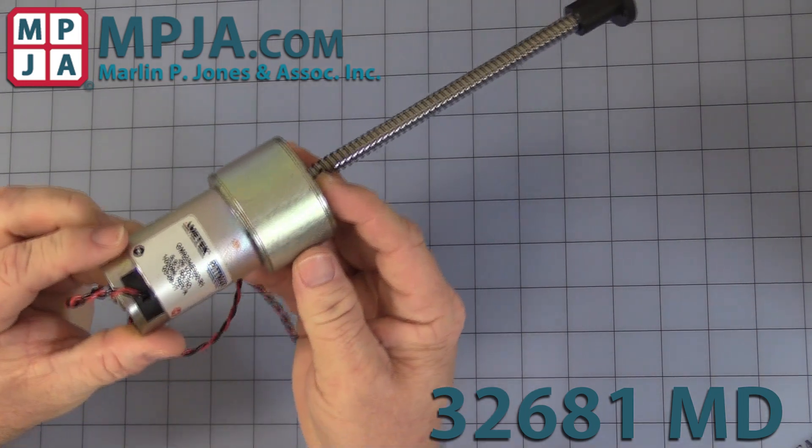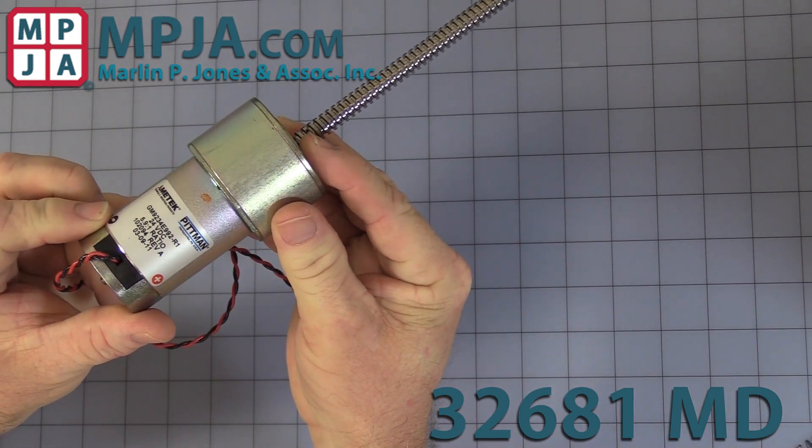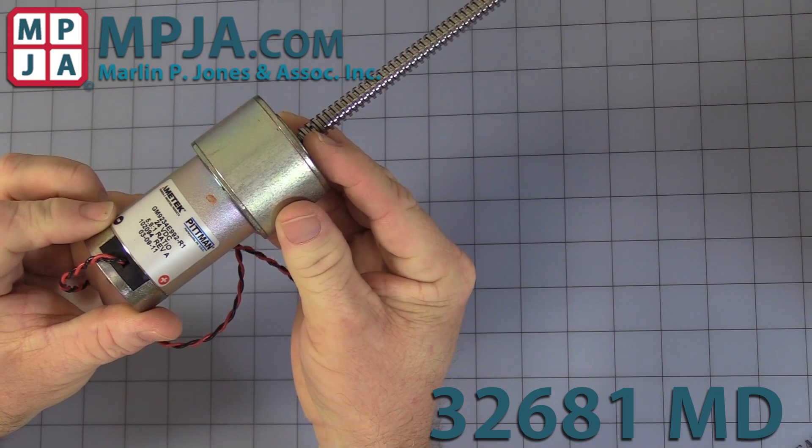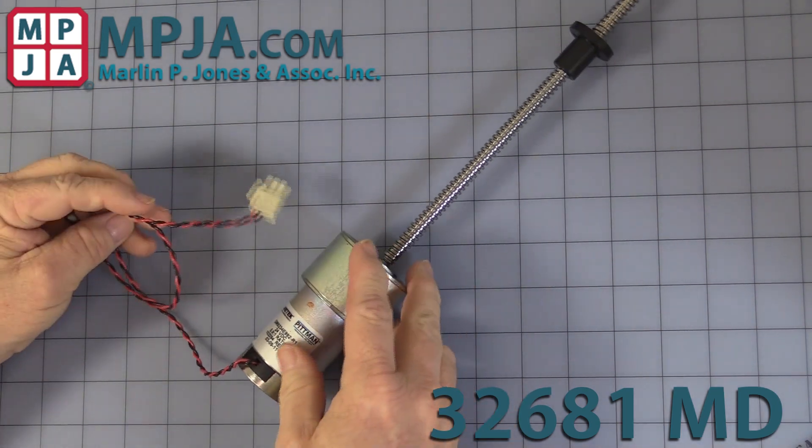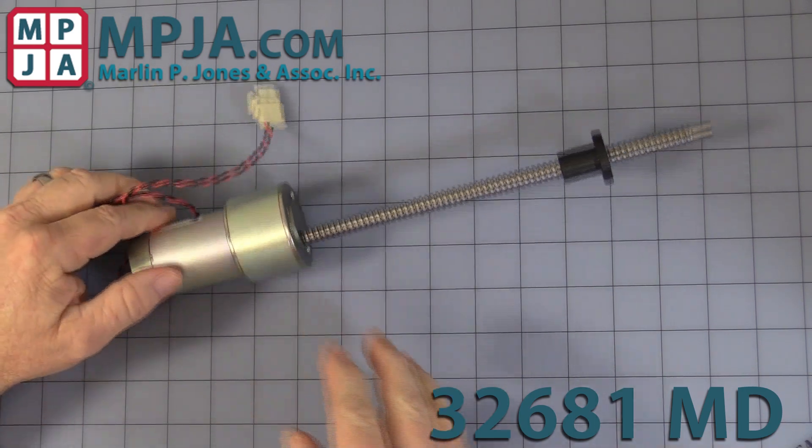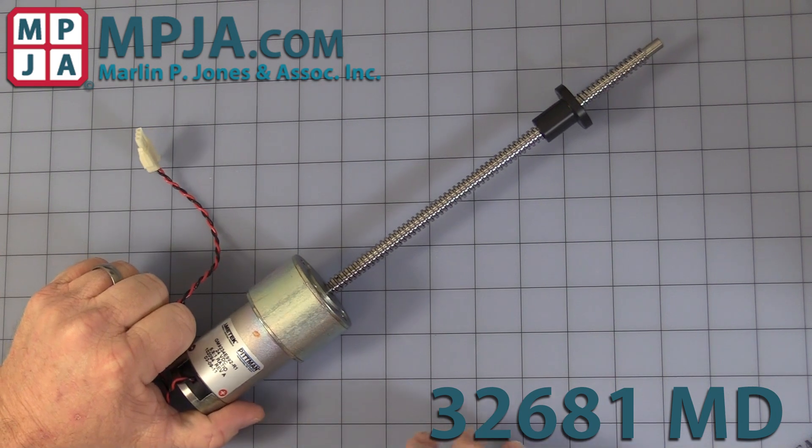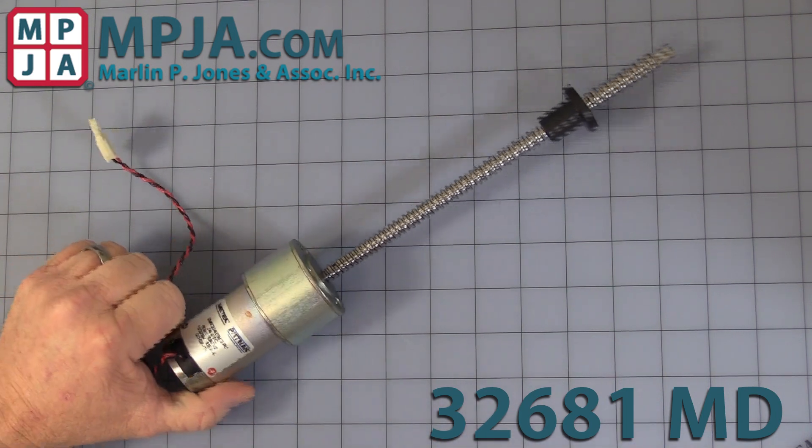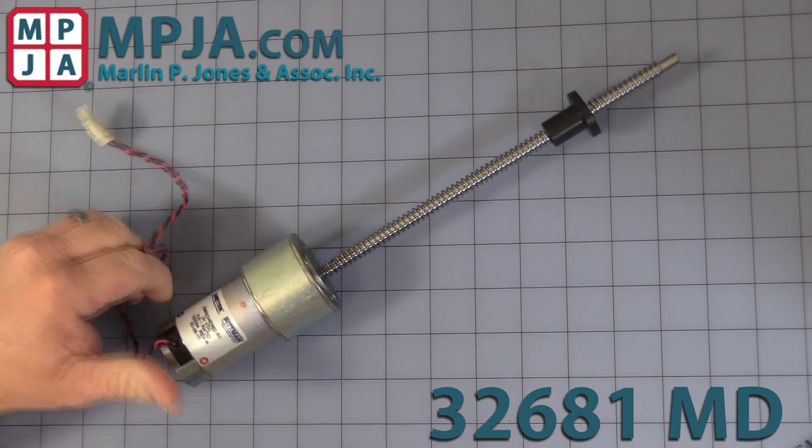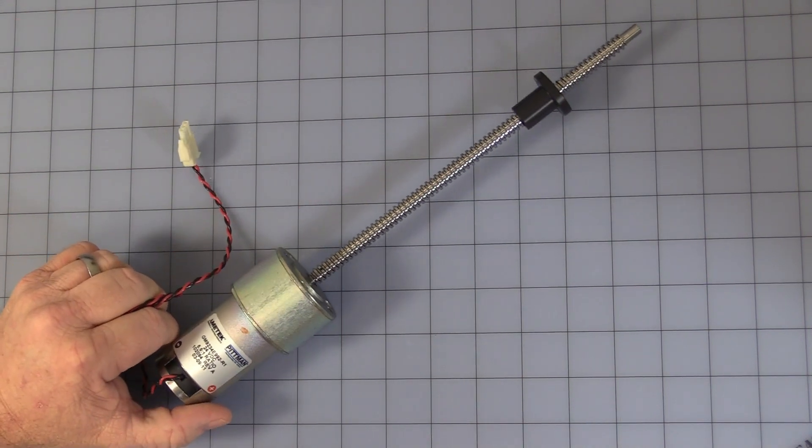The full part number is GM9234E992-R1. The wonderful thing about surplus deals like this is usually you start off with an exact number, then halfway through you'll find out there's a few R2s or some other variation, but if those numbers are important to you, please call and let us know. We'll be happy to check and make sure we have that exact model number for you.